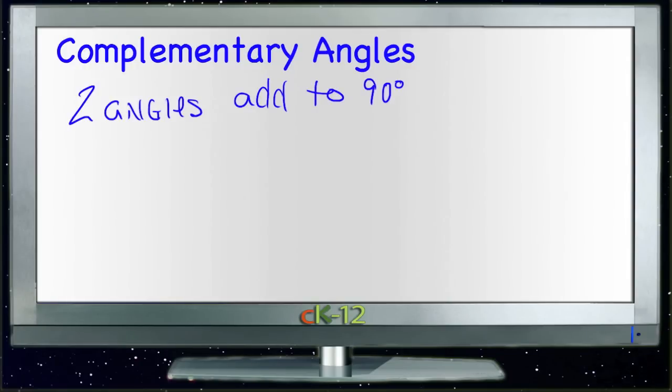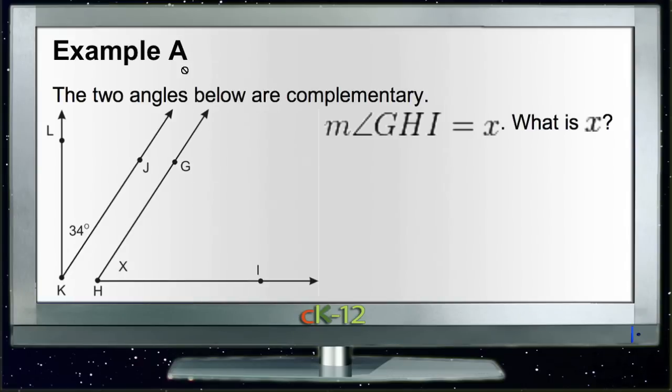As you're looking through your example questions in your text, Example A tells you that the two angles that you've given are complementary, and then asks you to find the degree measure of one of those angles. Since we know that all complementary angles have to total 90 degrees, the question actually becomes pretty simple.